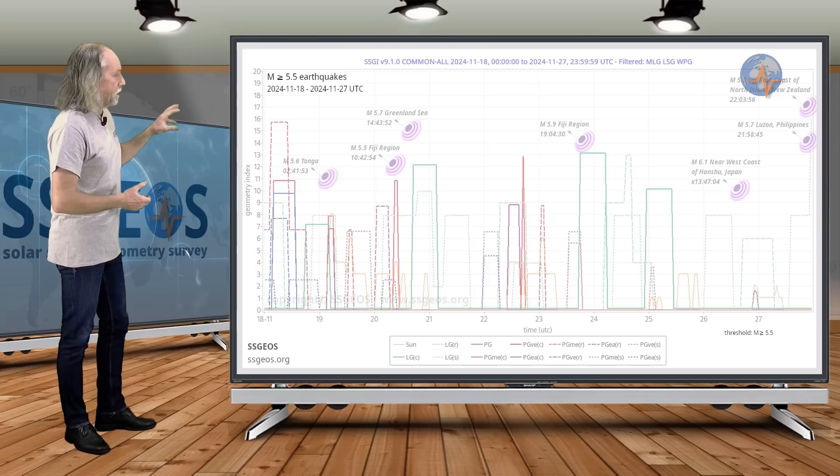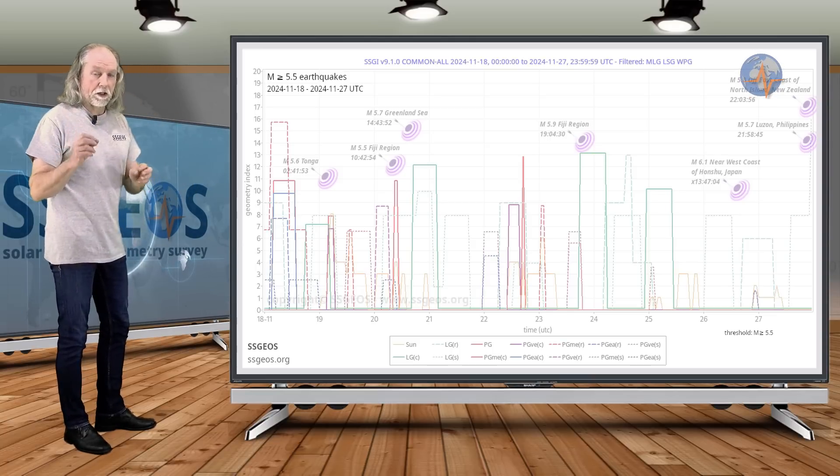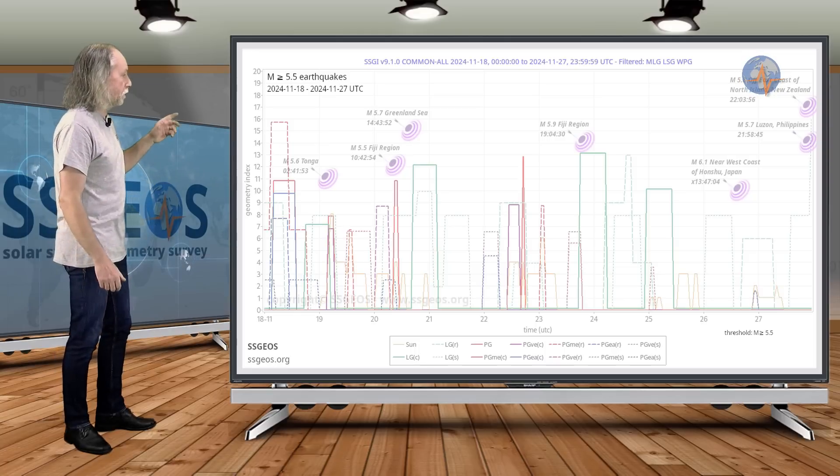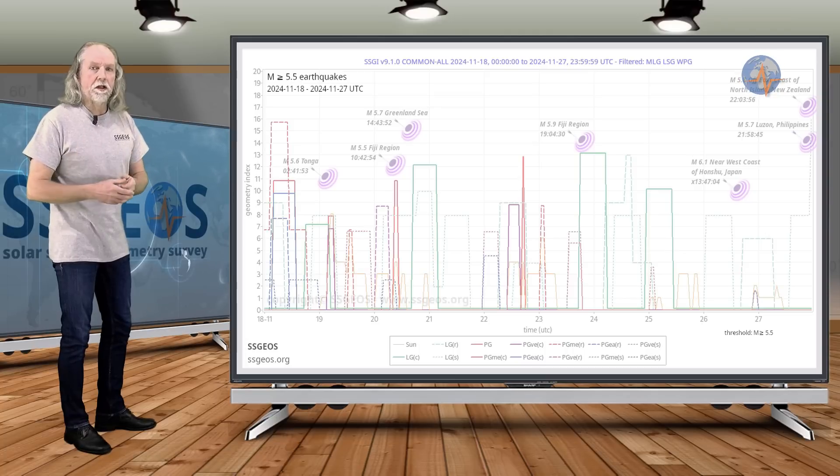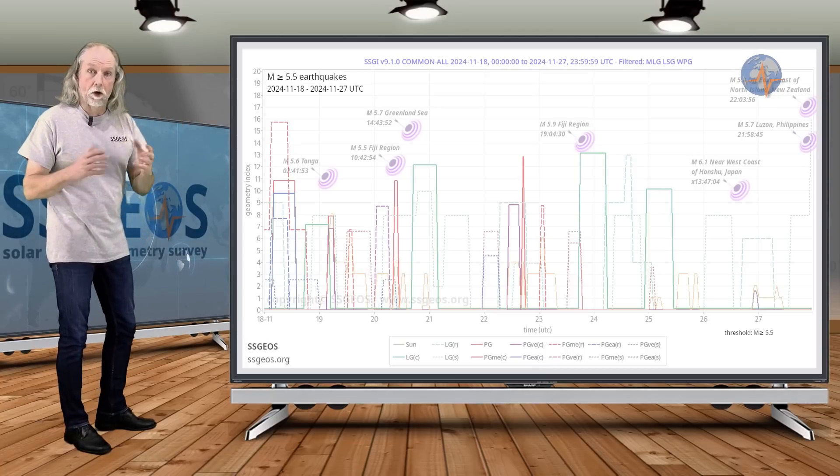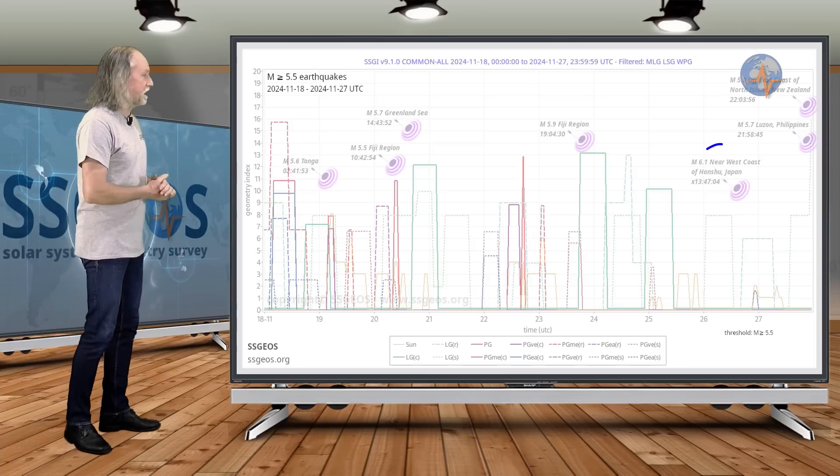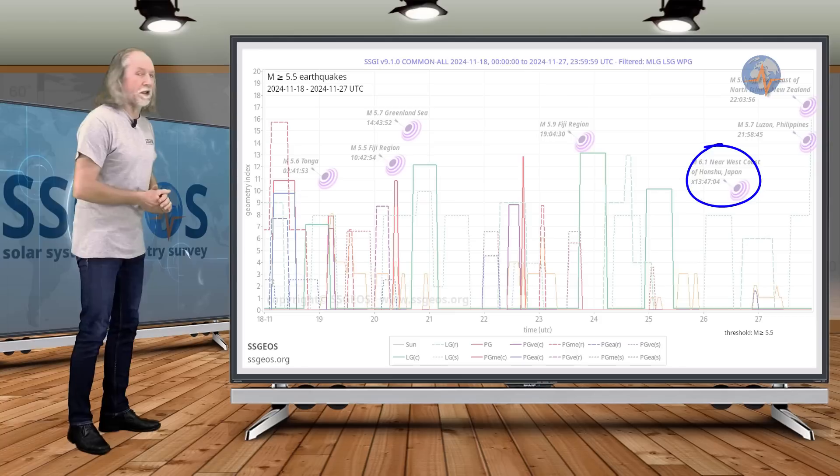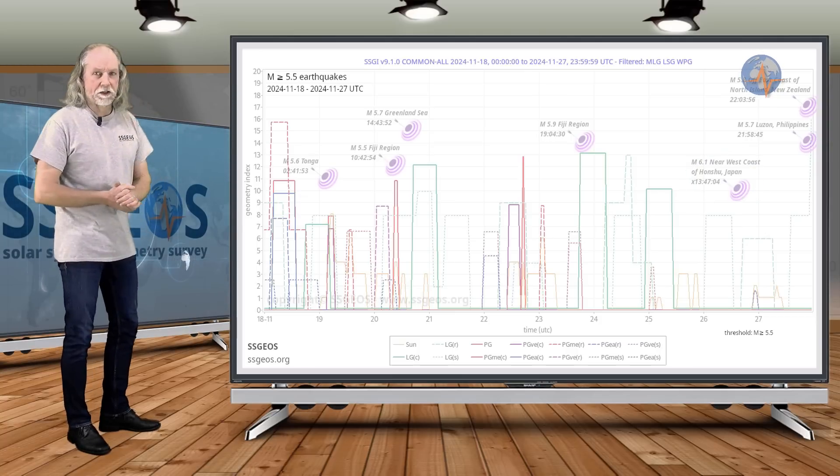Then we look at the end of this time frame and we actually see following the lunar peaks. Remember I explained in detail the lunar peaks on the 24th and 25th because usually we see a seismic increase following those lunar peaks if they follow on critical planetary geometry as we had on the 22nd. So we do see this 6.1 near the west coast of Honshu, Japan, which is the only magnitude 6 earthquake that we actually had in this entire time frame.